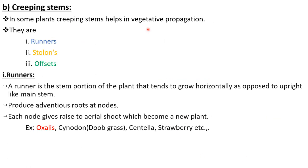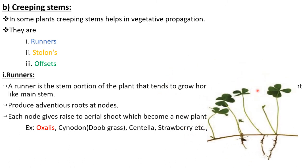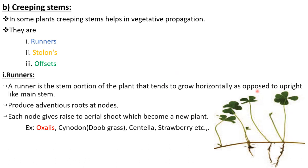Another category of stems is creeping stems. In some plants, creeping stems help in vegetative propagation. Creeping stems are weakened stems that cannot grow upward straightly. Creeping stems may be runners, stolons, or offsets. A runner is the stem portion of the plant that tends to grow horizontally as opposed to upright like the main stem.